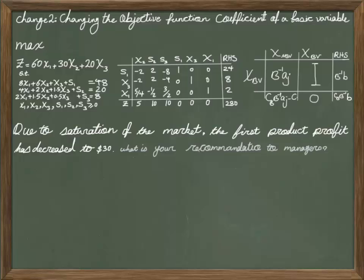When we talk about profit or cost, we're typically referring to objective function coefficients of decision variables. When we're referring to the first product, we're talking about X1 and we're talking about changing the profit from $60 to $30.